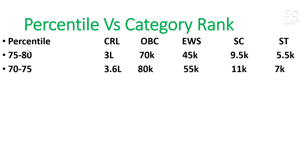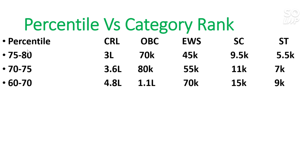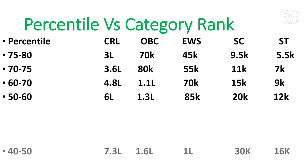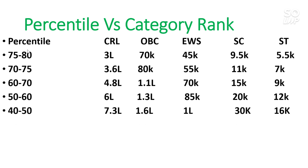For 70 to 75 percentile, CRL will be under 3.6 lakh. If you belong to SC/ST and are a home-state candidate, you can still get a good NIT at this percentile. For 60 to 70 percentile, CRL will be under 4.8 lakh. For 50 to 60 percentile, CRL will be under 6 lakh. For 40 to 50 percentile, CRL will be under 7.3 lakh.